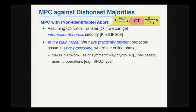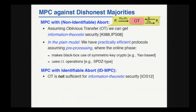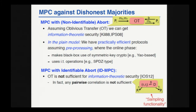This situation looks really good for standard security with abort. Let's see what happens if we want identifiable abort. A result by Ishai, Ostrovsky, and Seyalioglu from 2012 proved that oblivious transfer is not sufficient for information-theoretic security. In fact, they prove that having any pairwise correlation is not sufficient for information-theoretic security. By pairwise correlation, I mean having access to any sampling functionality that samples from a pair from an arbitrary distribution and gives one component to each party.